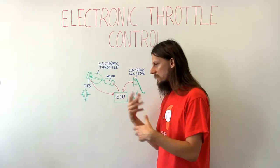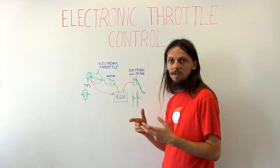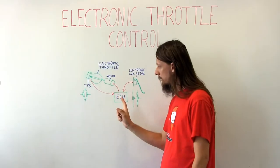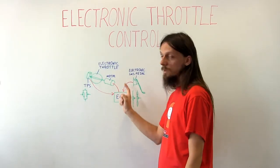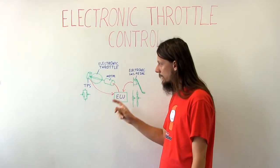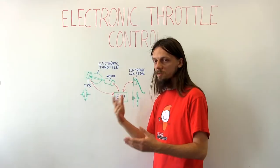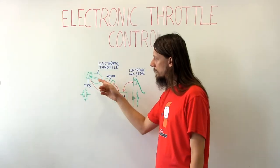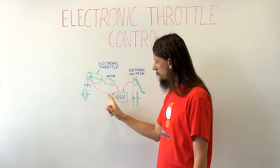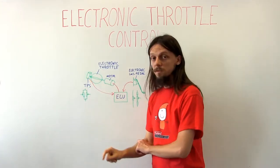The ECU will then take this information and calculate the needed position of the throttle. It will send another electric signal to the motor and the motor will just move the throttle body. In order to keep the body in a correct position, the ECU will also take the signal from the throttle position sensor.